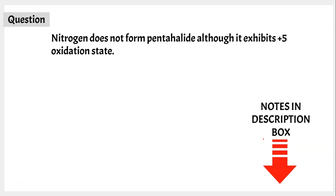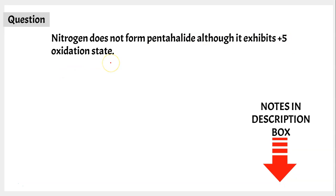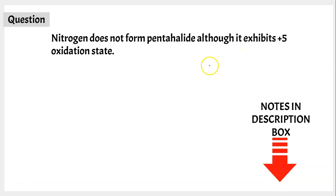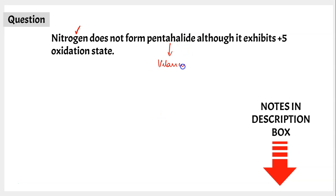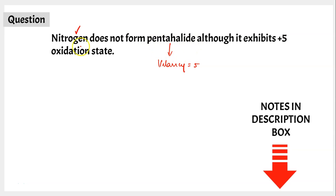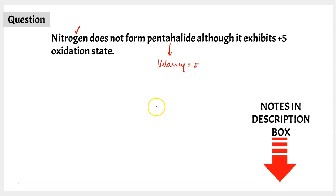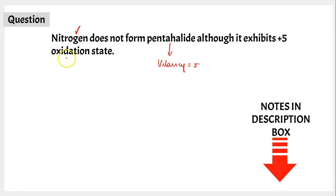Question number one: nitrogen does not form pentahalide although it exhibits a +5 oxidation state. We are talking about the valency of nitrogen. In pentahalide, the valency is expected to be 5, which means nitrogen must be forming 5 chemical bonds. To understand the answer we need to identify the difference between valency and oxidation state.